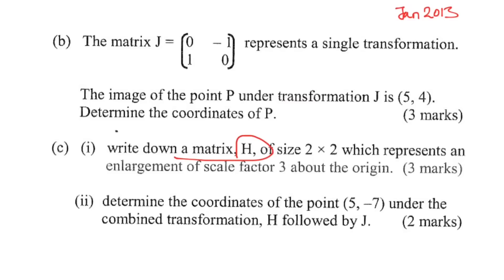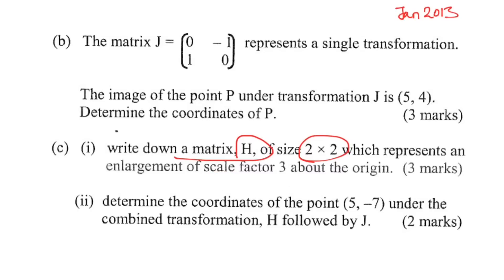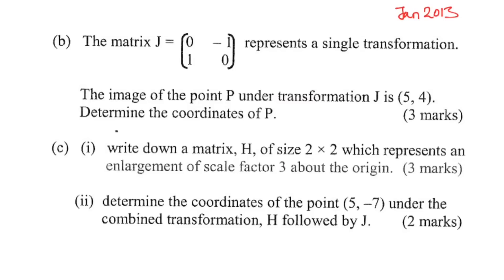Now we need to write down a 2×2 matrix H that does an enlargement of scale factor 3. You want it to multiply everything by 3, so the matrix is [3, 0; 0, 3]. The identity matrix is [1, 0; 0, 1] — that's the one matrix you always need to know. Multiplying by the identity doesn't change anything, so a matrix of [2, 0; 0, 2] multiplies by 2, and [3, 0; 0, 3] multiplies by 3.